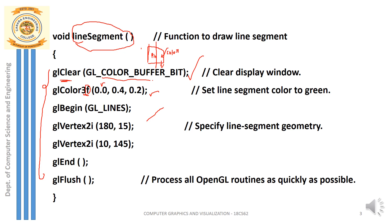You pass three parameters to glColor3f indicating red, green, and blue. Here, the red value is 0, meaning no red component. I am choosing a green value of 0.4 and a blue value of 0.2 — a mixture of green and blue. That is the color set to draw the line. Remember, the color is only chosen here; drawing has not yet started. Next, to draw the line, the first function is glBegin.